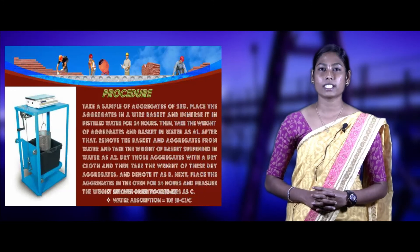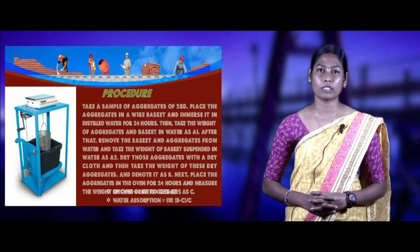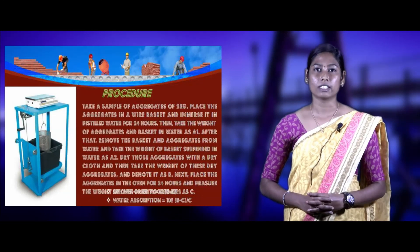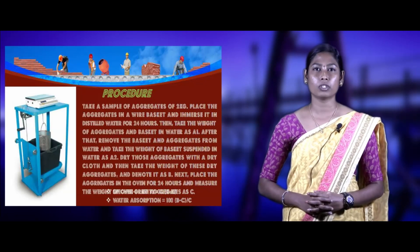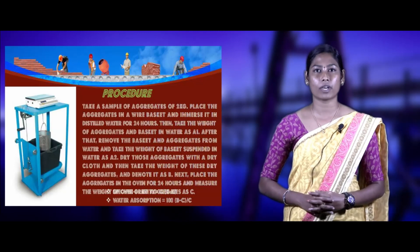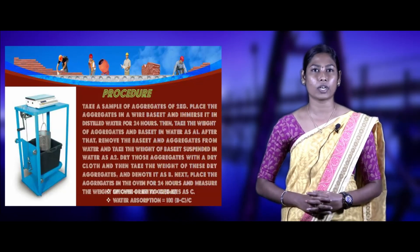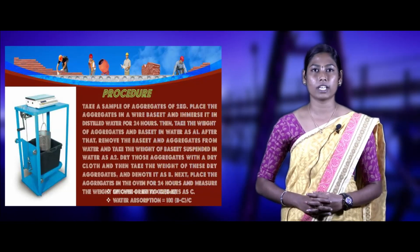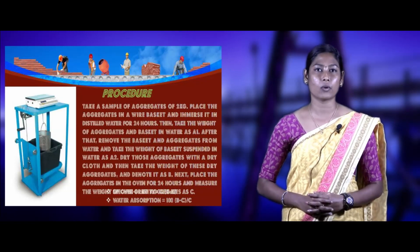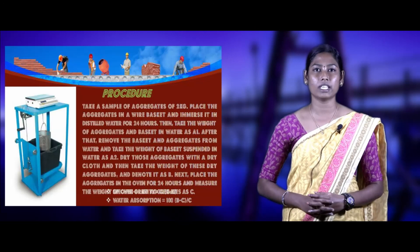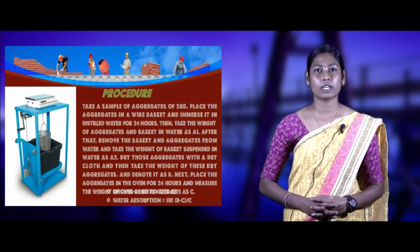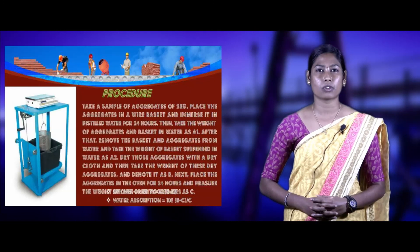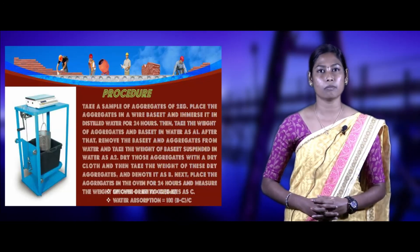Procedure for specific gravity and water absorption test: take a sample of aggregates, place in a wire basket, and immerse in distilled water for 24 hours. Take the weight of aggregate and wire basket in water as A1. Remove the basket and aggregates from the water, and take the weight of the wire basket suspended in water as A2. Dry the aggregates with a dry cloth and take the weight of aggregates as B. Place the aggregates in the oven and dry for 24 hours, then take the weight as C. The formula for specific gravity: C / (B − A); water absorption: (B − C) / C × 100.